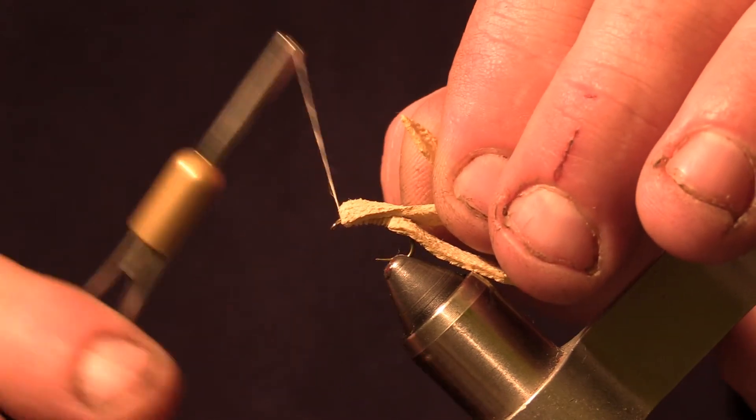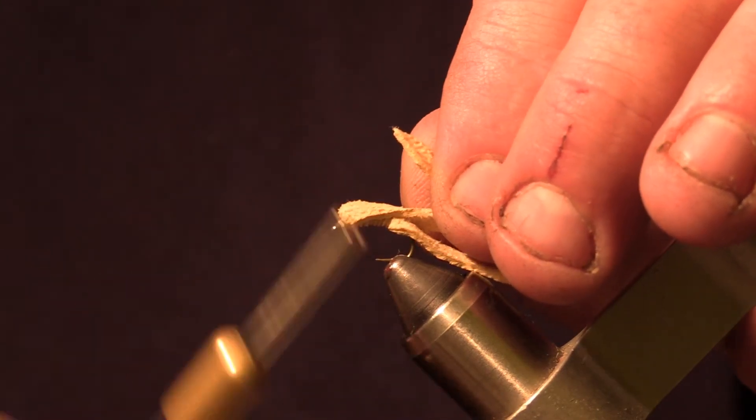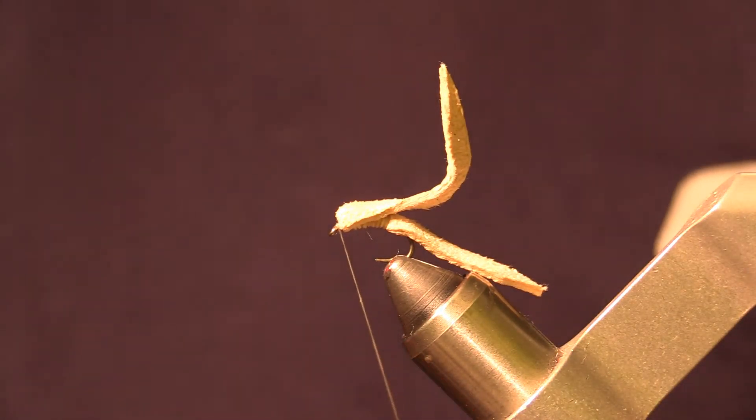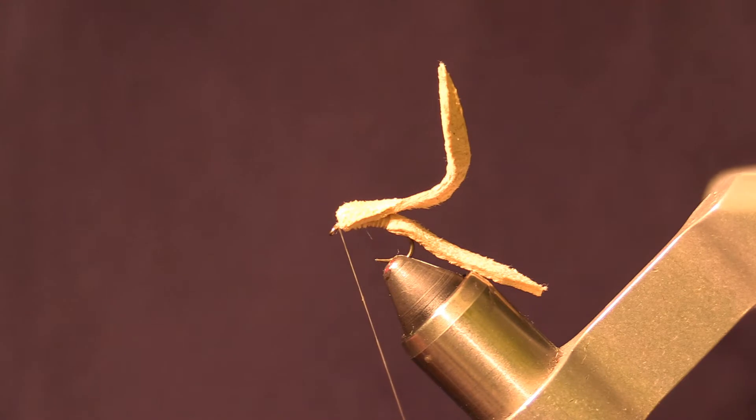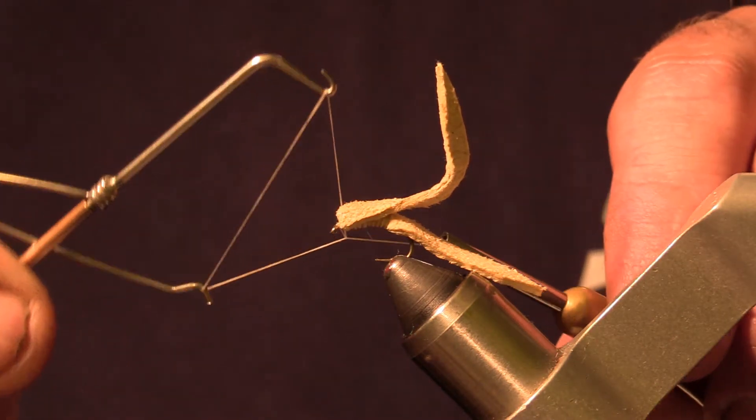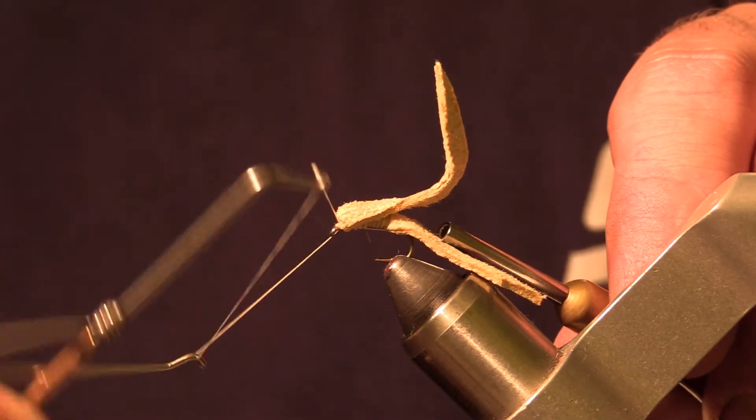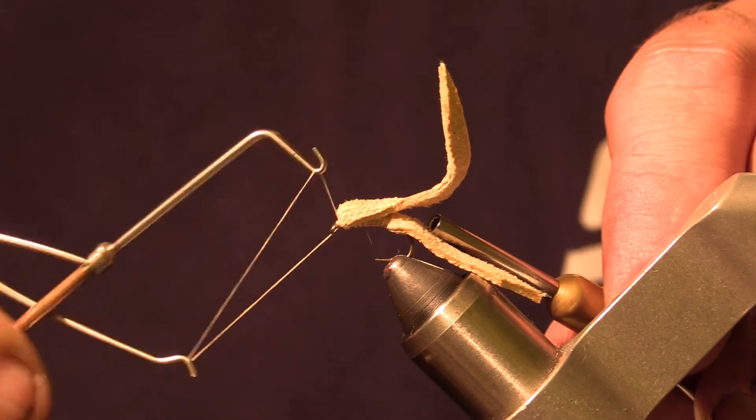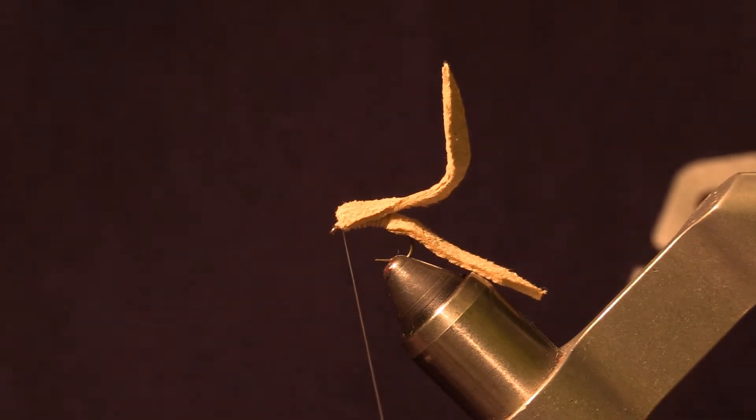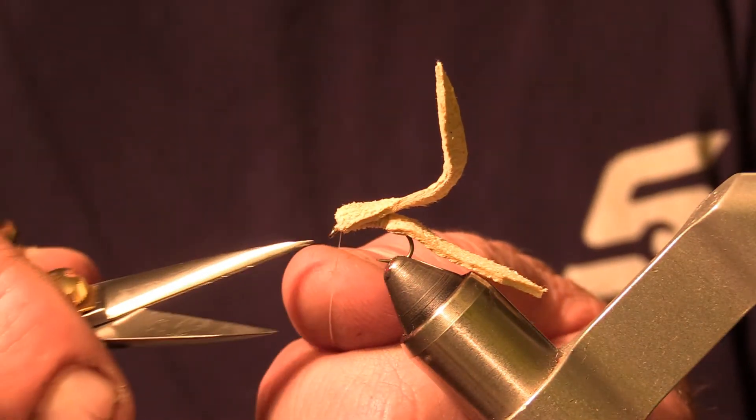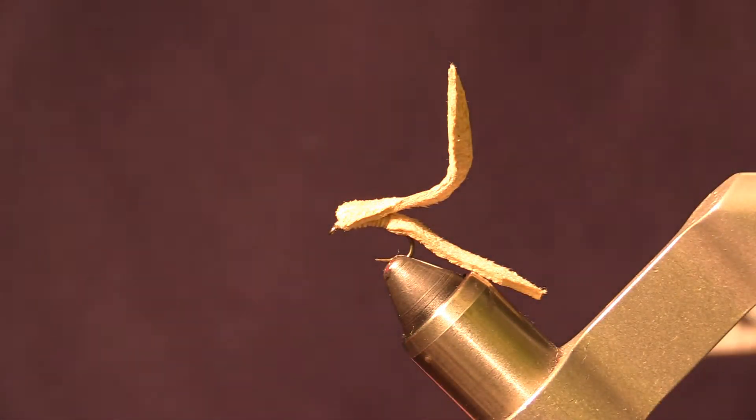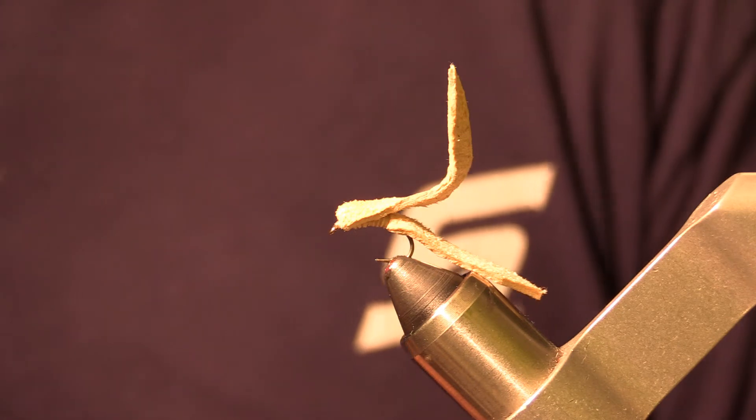And then you pull it back, put some wraps in front of the material, and then we're going to do a whip finish. It takes no time to tie this. It takes you longer to get the material cut and ready.